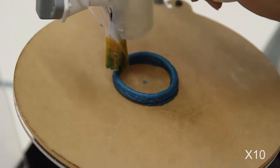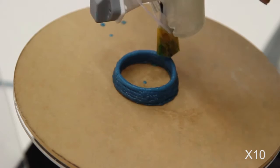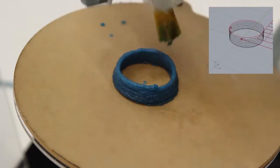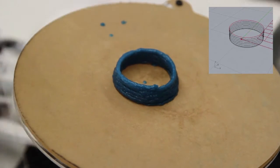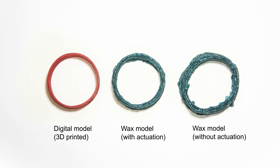The model is created one layer at a time until the user decides to stop extrusion by simply putting the extruder away. Here we showcase our design result. On the left is the final 3D printed model of the digital cylinder. In the middle is the wax cylinder proxy created with the actuation mechanism on. As a comparison, we also include a wax cylinder built without actuation.